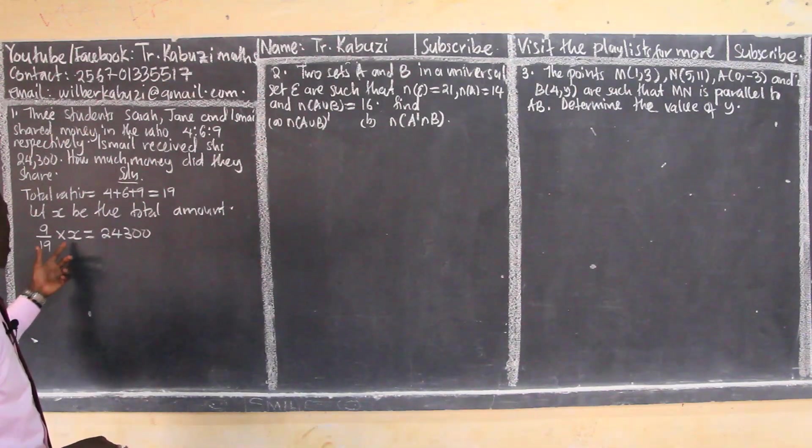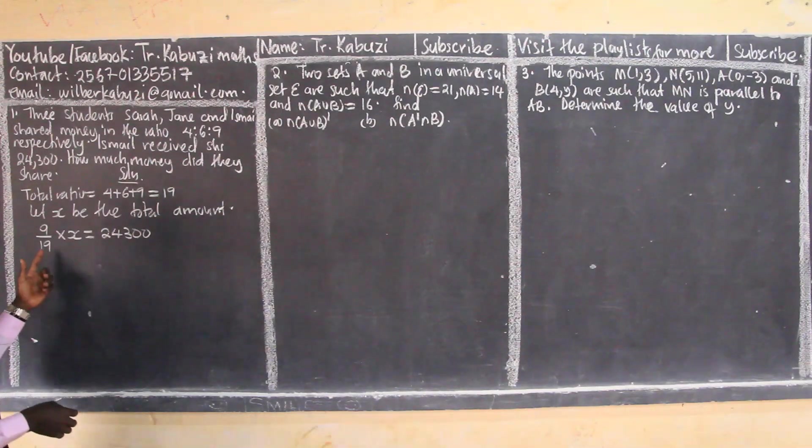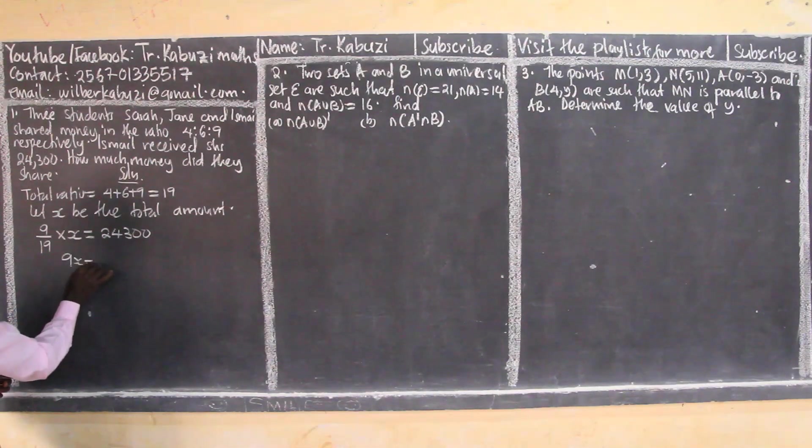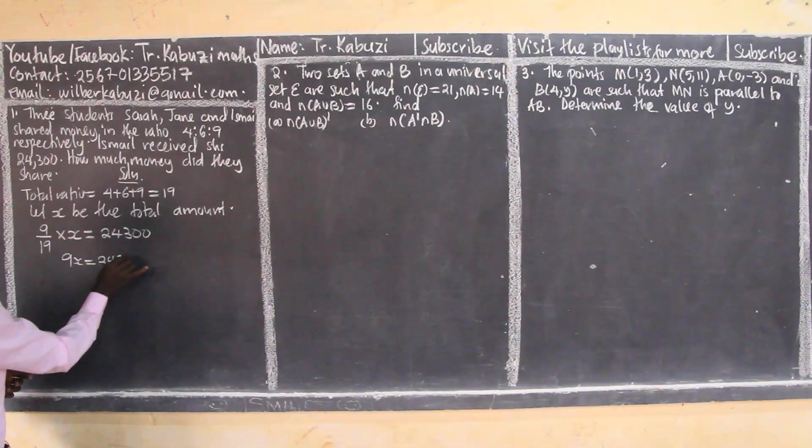So the only thing now is to make x the subject. I will cross multiply to this side, so I'll be having 9x. Then I make x the subject.